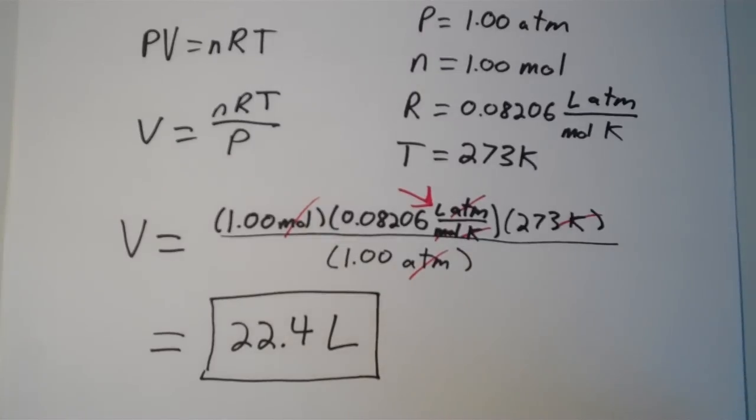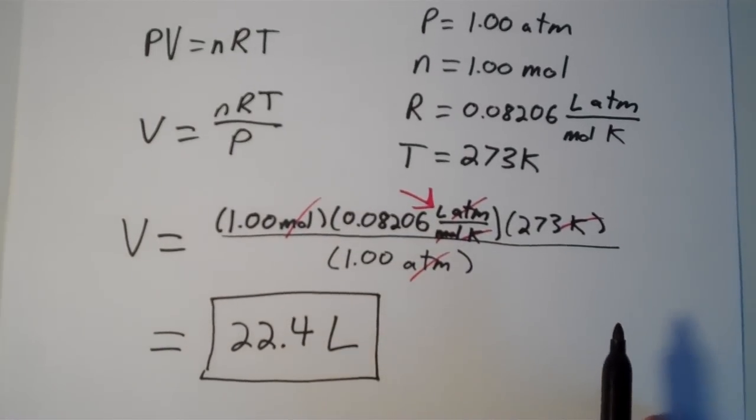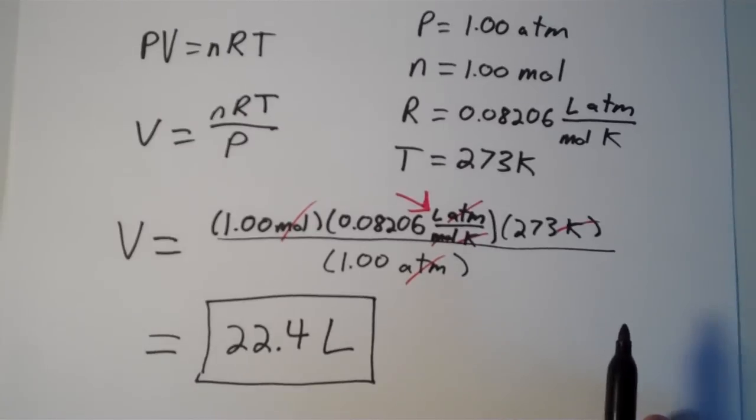So molar volume is useful because the ideal gas law can not only tell you what the molar volume of an ideal gas is, but it can also be used to approximate the volume of an ideal gas that has close to standard conditions. So that's just one aspect of some of the applications of the ideal gas law. And in a later video, I'm going to post a couple more applications. So stay tuned.